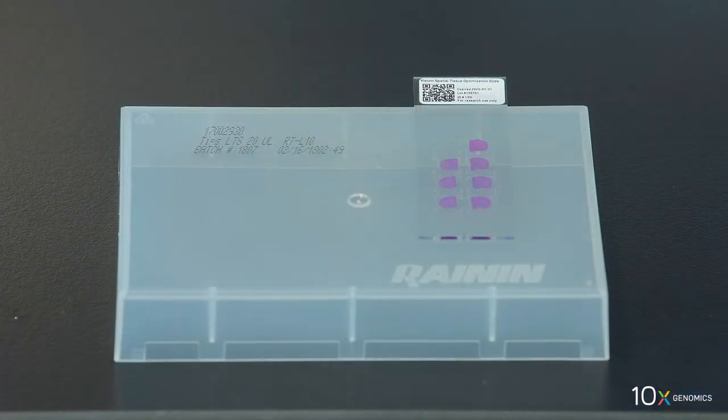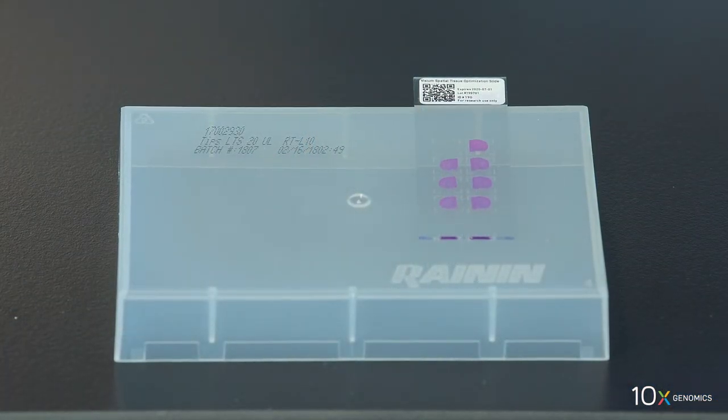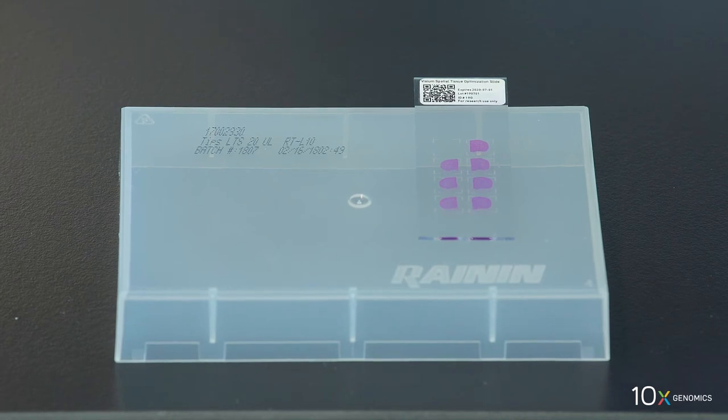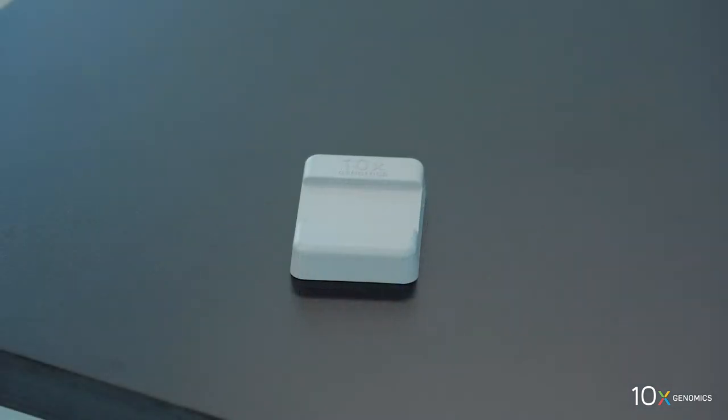We have completed tissue imaging. Now we will assemble the slide cassette. We have our Visium spatial tissue optimization slide with the fixed, stained, and imaged tissue. We have a slide cassette, a gasket, and the slide alignment tool.